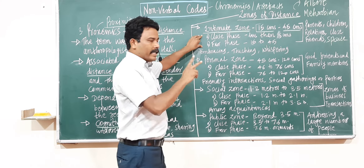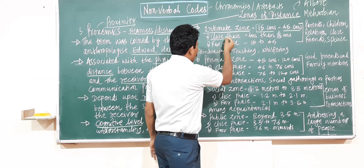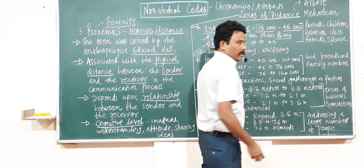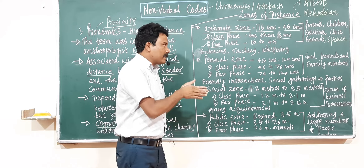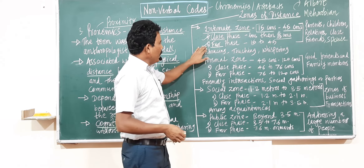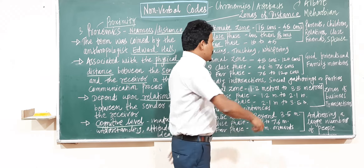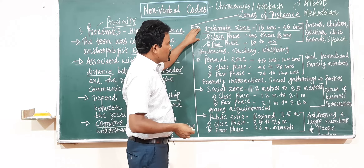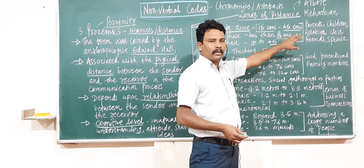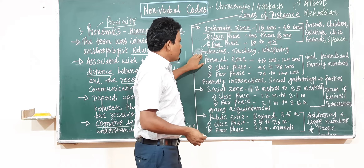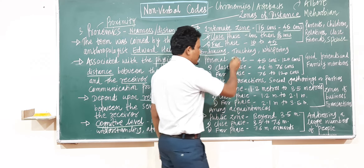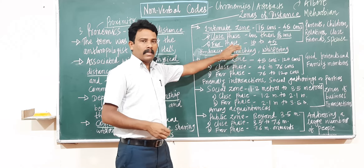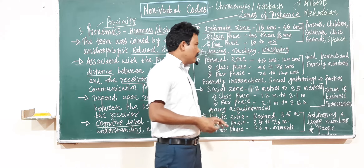There are two phases within the intimate zone: the close phase, which is less than 15 cm, and the far phase, which is 15 cm to 45 cm. This zone is very important for embracing, touching, and whispering — saying something quietly to another person.